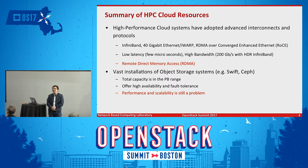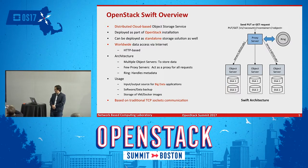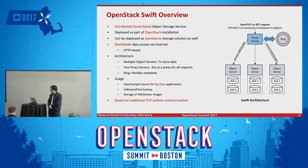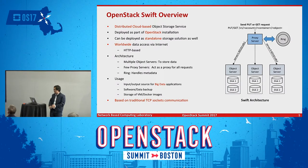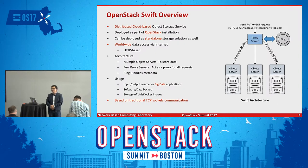On the other hand, if you look at cloud storage systems — taking Swift as an example — it gives you a lot of big capacity, but performance scalability is still a big problem. Swift is a distributed cloud-based object storage service. It can be deployed as part of an OpenStack installation or as a standalone component. User requests come through HTTP to proxy servers, which handle requests, and data is saved or retrieved from multiple object servers. The ring component handles the metadata.